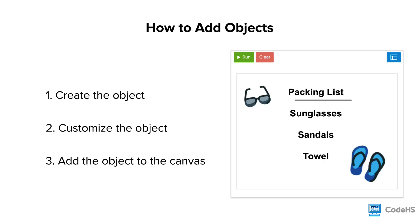When adding each item to the canvas, we will be following the same three-step process. First, create the object. Second, customize the object. And third, add the object to the canvas.